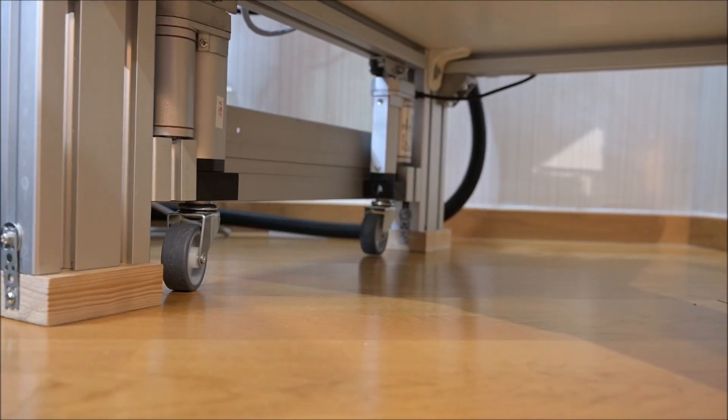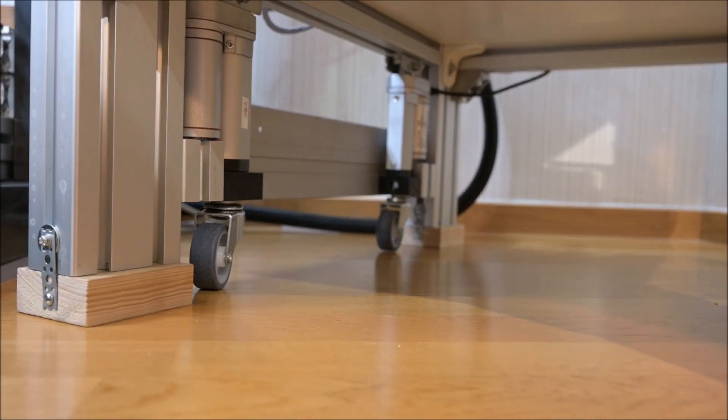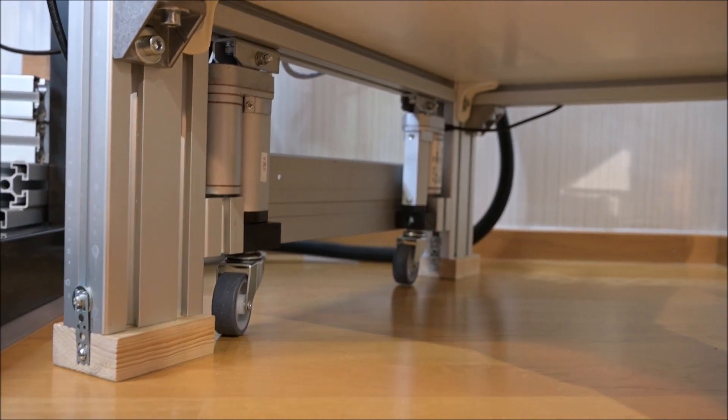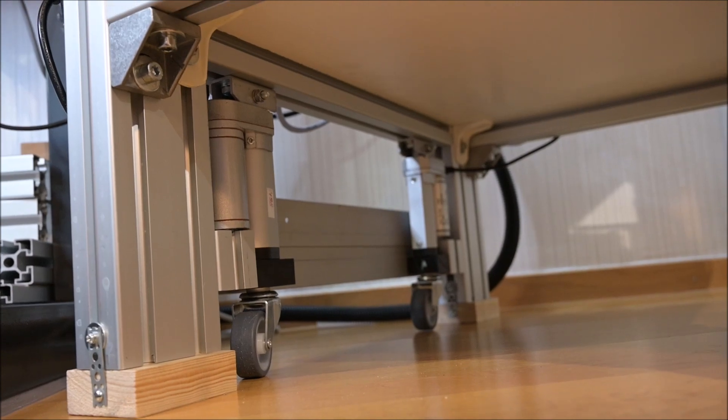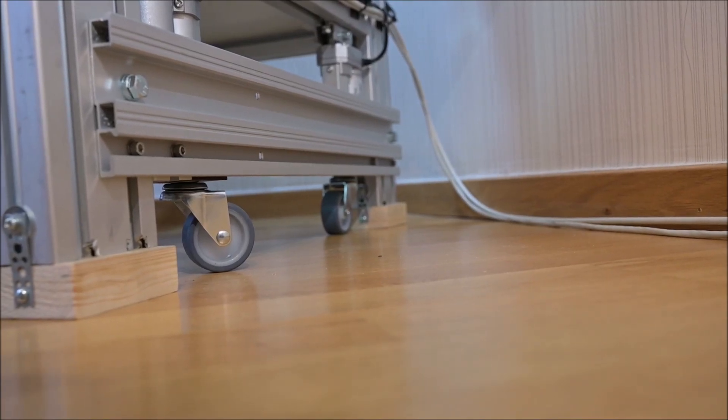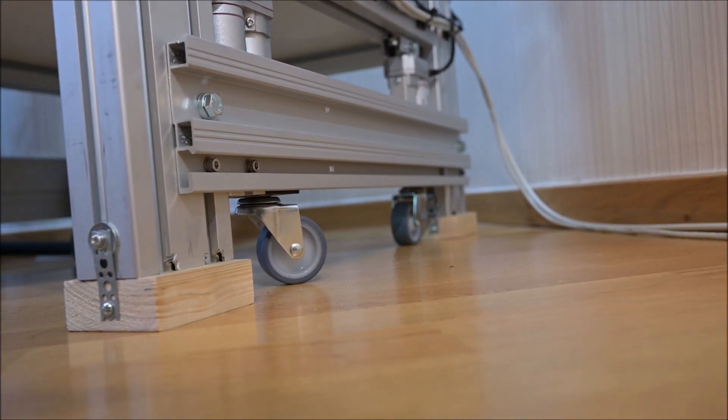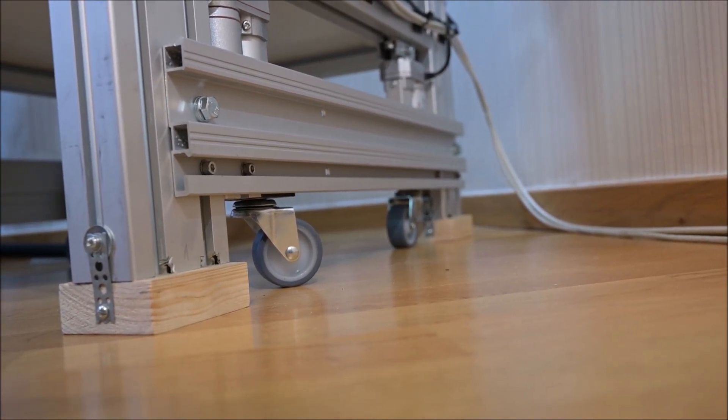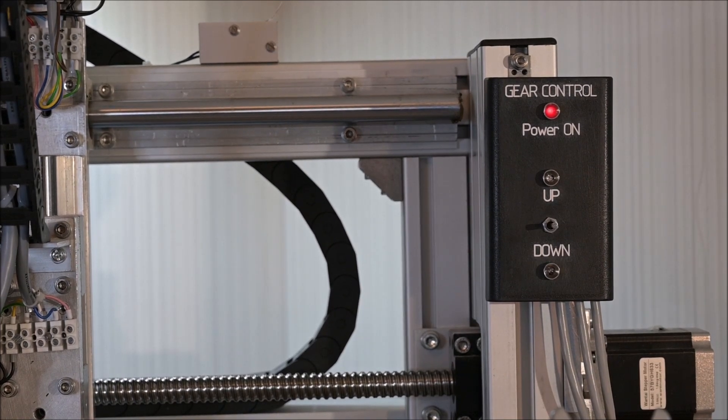Welcome back to this third part of my series about the linear actuators I installed under my CNC to be able to move it around a bit more easily than before. I also added two new aluminum profiles to make it a bit more rigid.